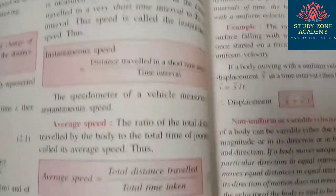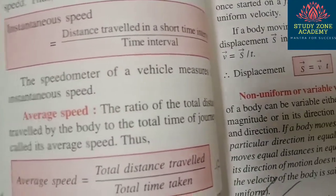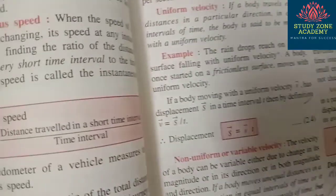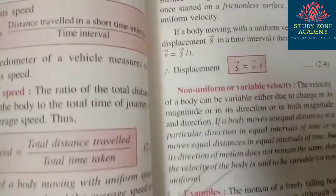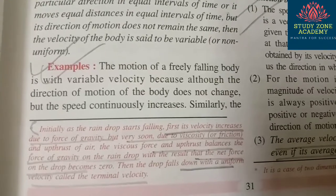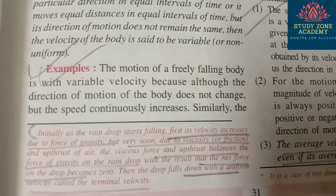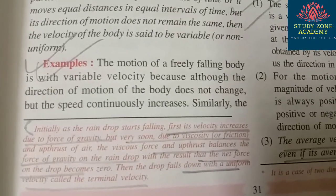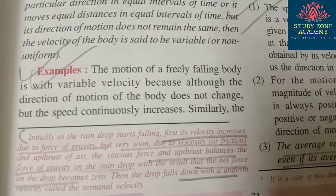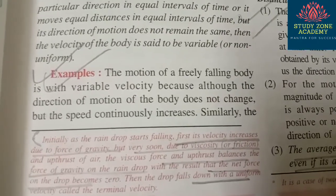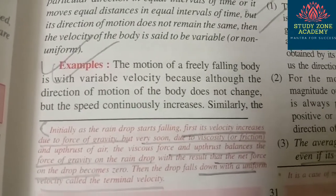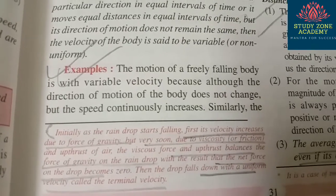One important question regards raindrops — what is terminal velocity? Initially as a raindrop starts falling, its velocity increases due to gravity, but very soon the viscous force and upthrust of air balance the force of gravity, making the net force zero. Then the drop falls with uniform velocity called the terminal velocity. I'm 99% sure this question will come.